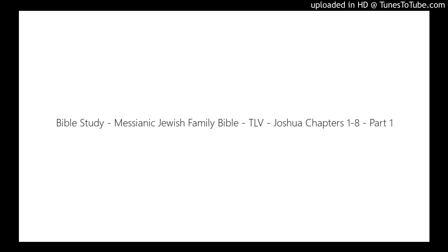We're beginning a brand new section of the Messianic Jewish Family Bible, Tree of Life Version, TLV. There's going to be a lot of history in here. The first two books — Joshua and Judges — are known to be within the books of history. Then we get into the first and second books of Samuel, which get into the story of Samuel, Saul, and King David. Then we proceed into Kings, where we continue with King Solomon, Elijah, Elisha, Ahab, Jezebel — all those characters.